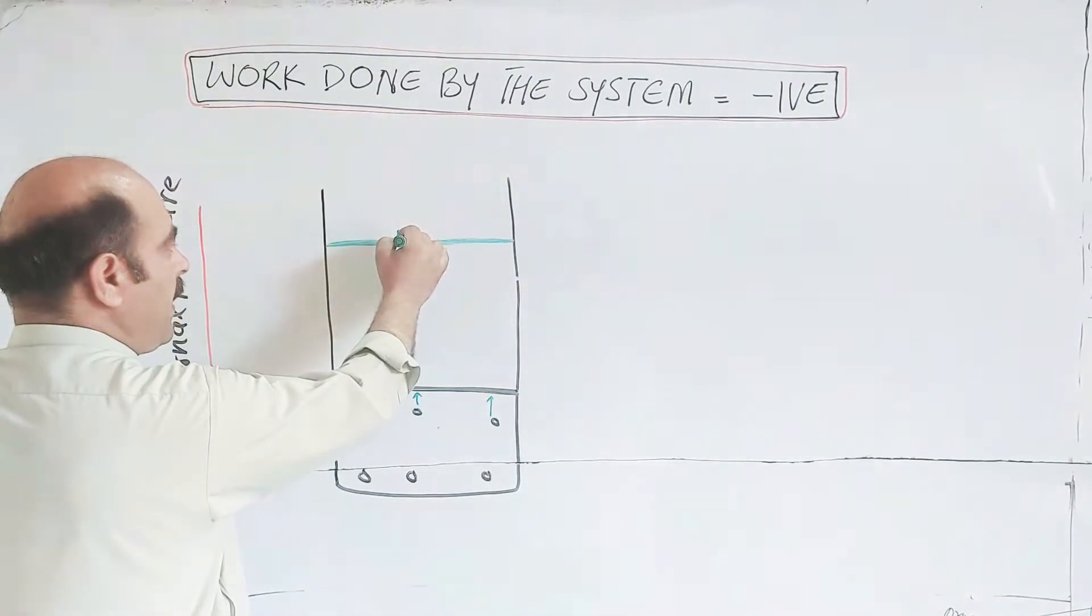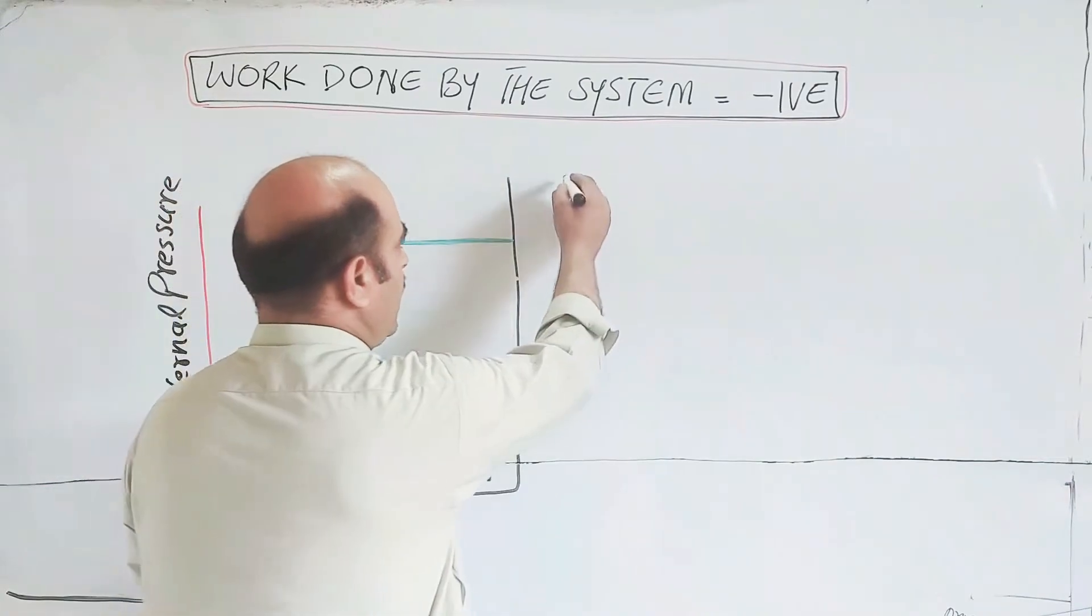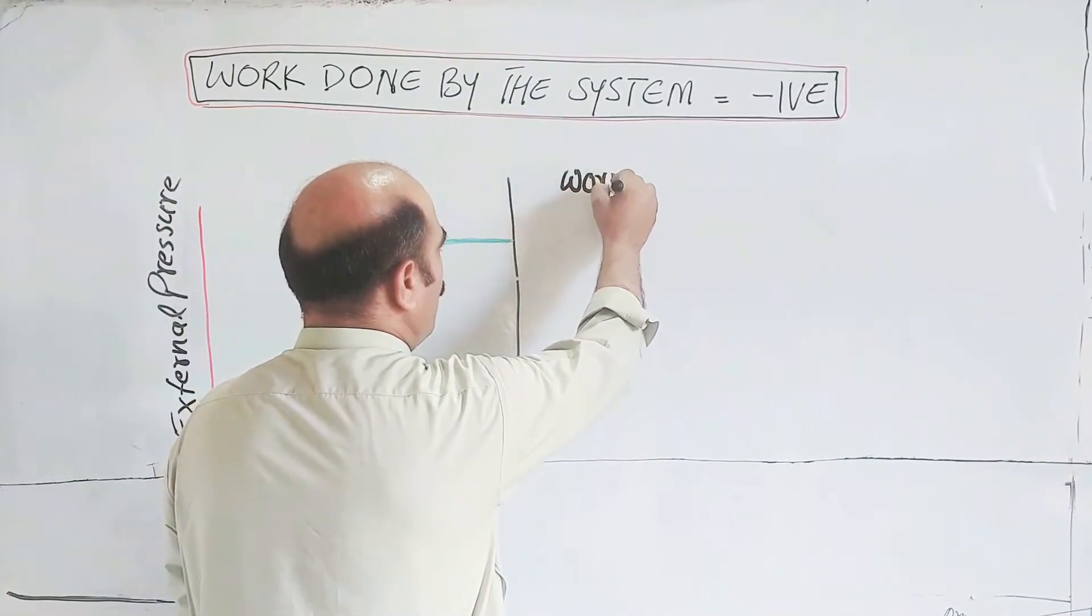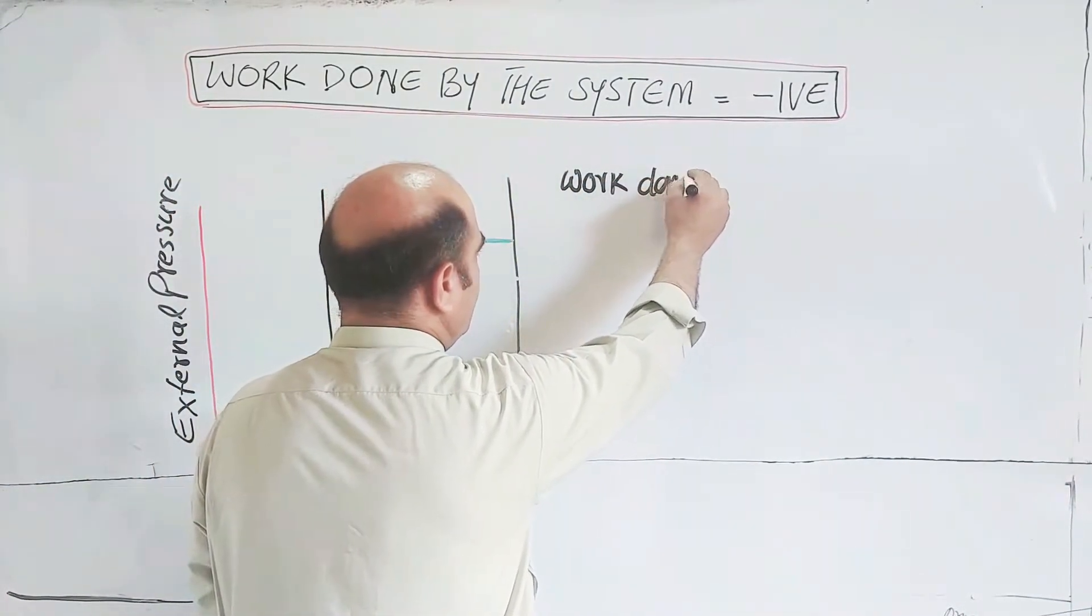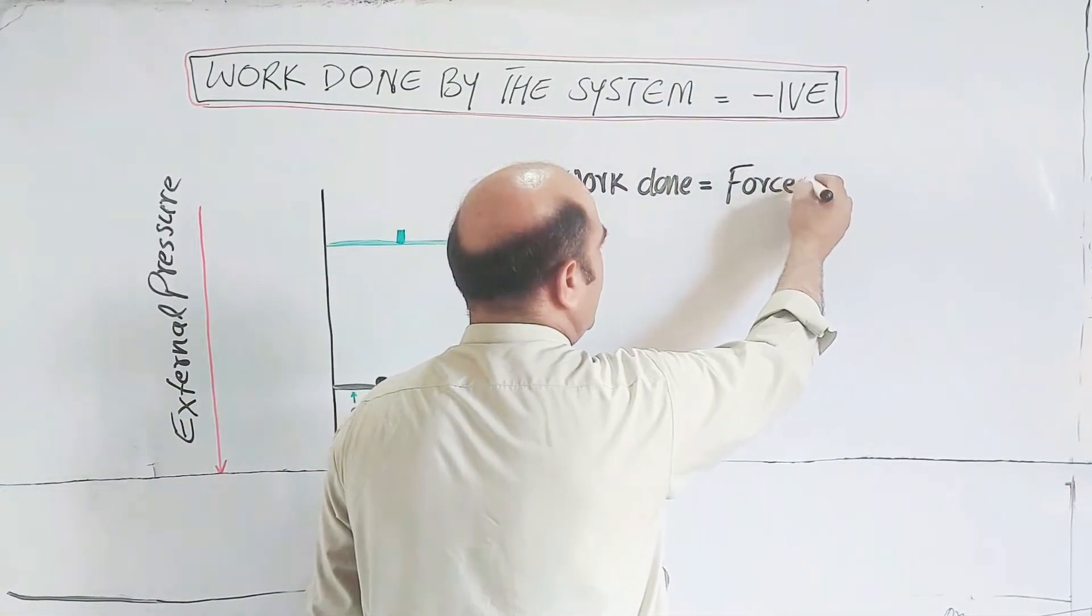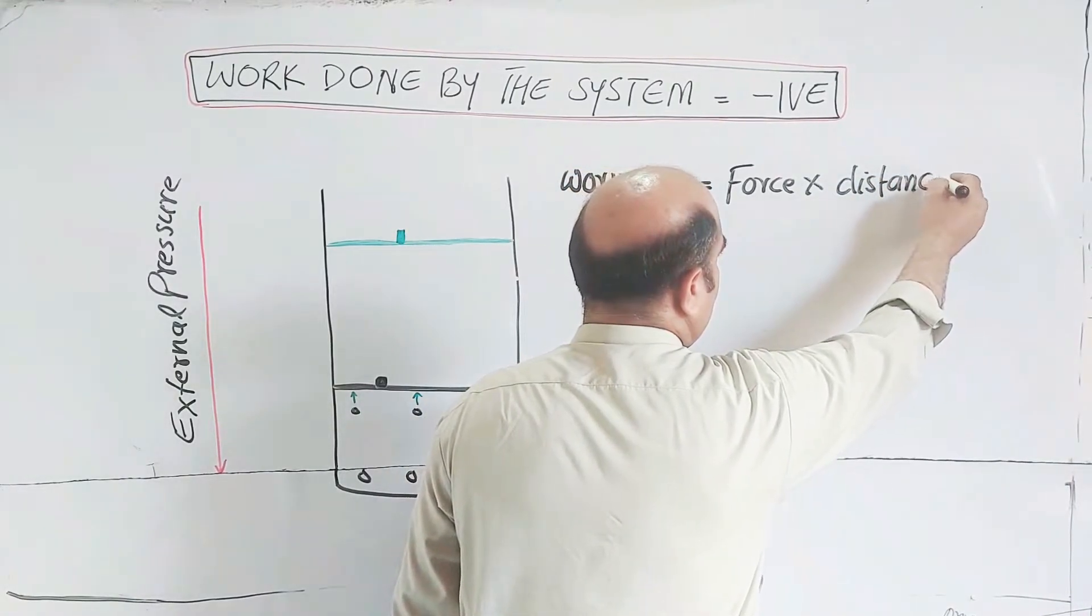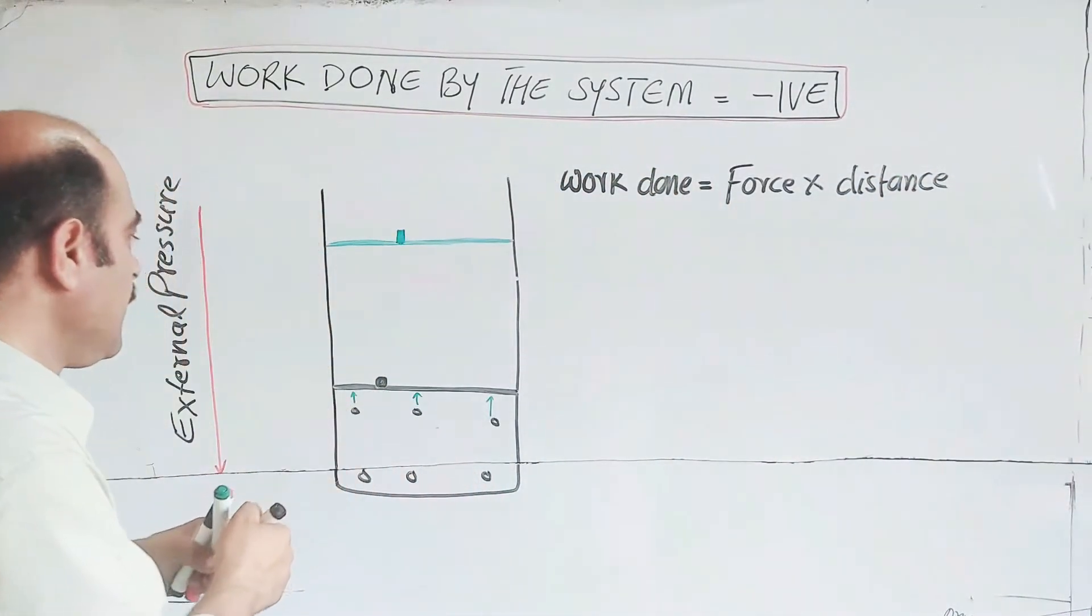Force multiplied by distance covered, this is called work done. Force multiplied by distance covered.